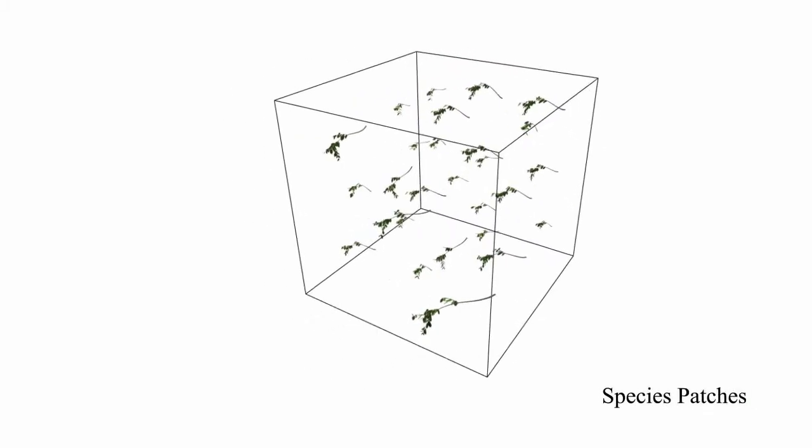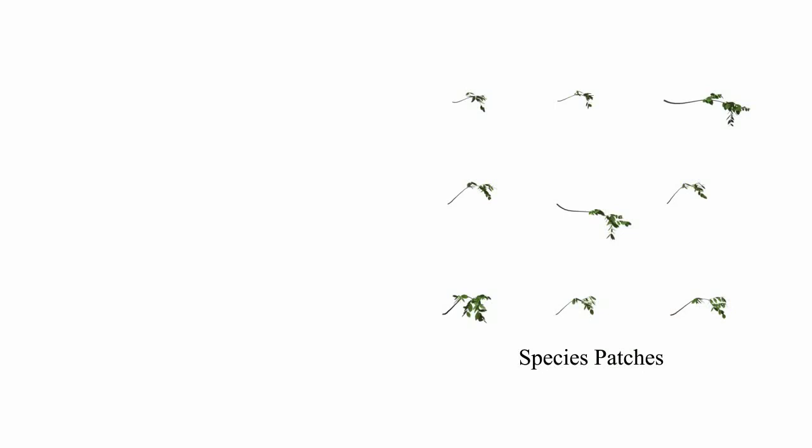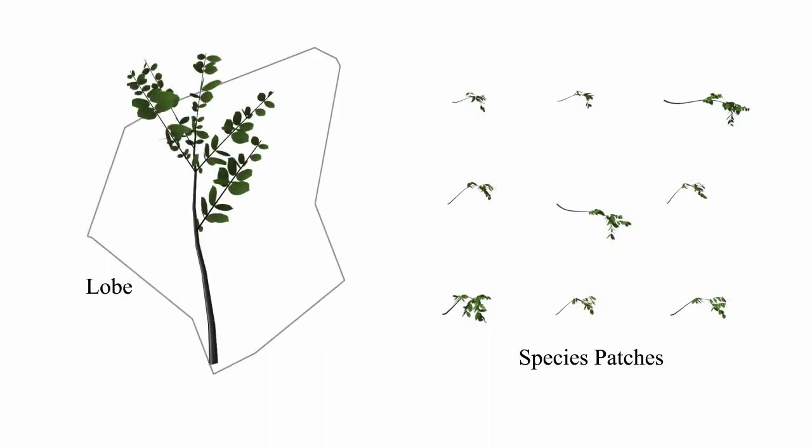The species library provides us with a set of lobe textures for each species. Each patch has a number of seed points for connecting to adjacent patches. Lobe textures are selected according to their branch width, vertical angle, and proper fitting to the lobe geometry.